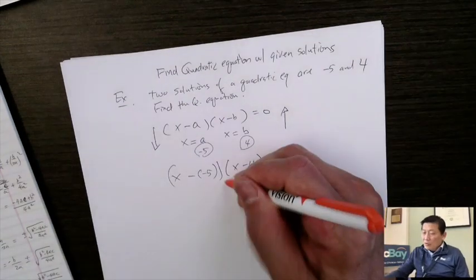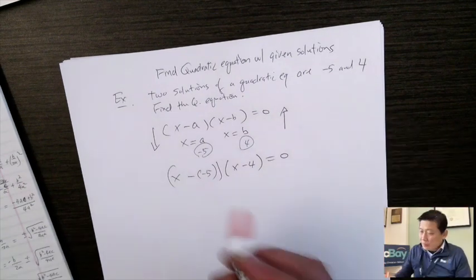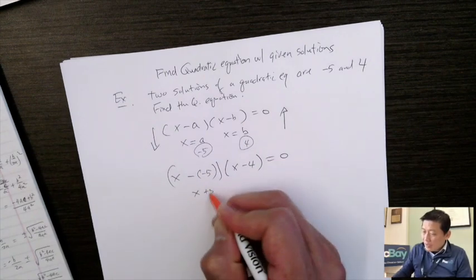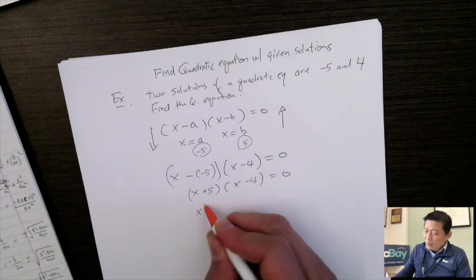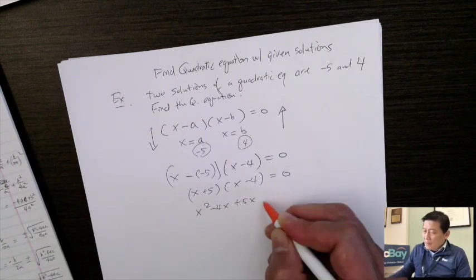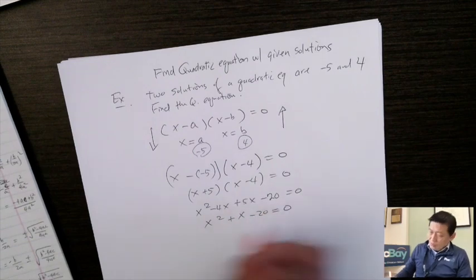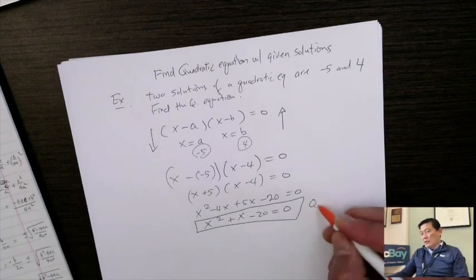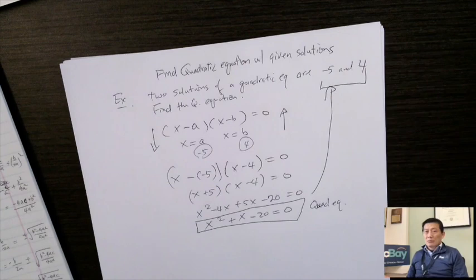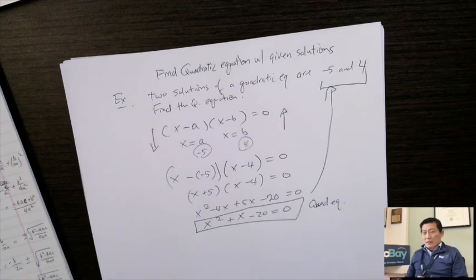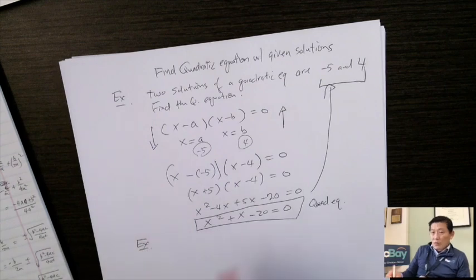Expanding using FOIL: x squared minus 4x plus 5x minus 20 equals zero, which gives x squared plus x minus 20 equals zero. This is the original quadratic equation that produces solutions of negative 5 and 4.